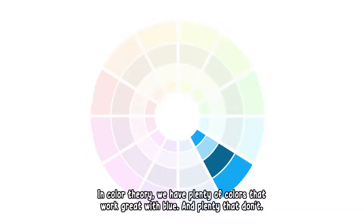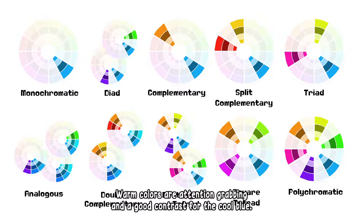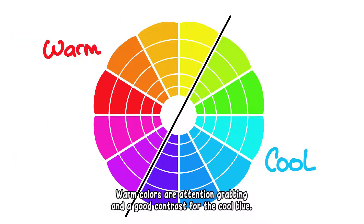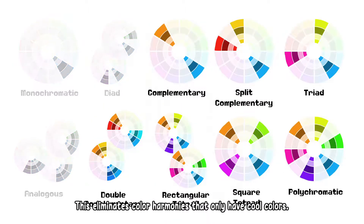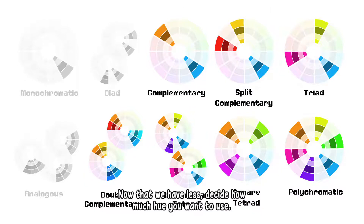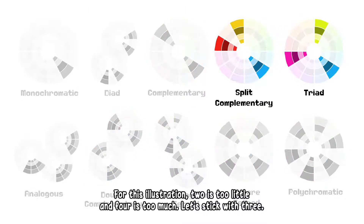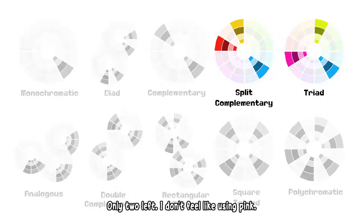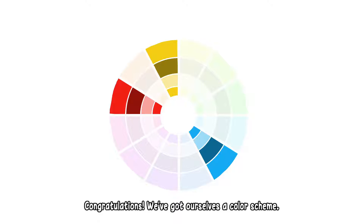In color theory, we have plenty of colors that will agree with blue and plenty that won't, which helps eliminate a lot of possibilities. Warm colors are attention-grabbing and a good contrast for the cool blue, and it's a good idea to use them for our main character. This eliminates color harmonies that only have cool colors. Now that we have fewer options, decide how much hue you want to use. For this illustration, 2 is too little and 4 is too much — let's stick with 3. I don't feel like using pink, so the winner is split complementary. Congratulations, we've got ourselves a color theme.